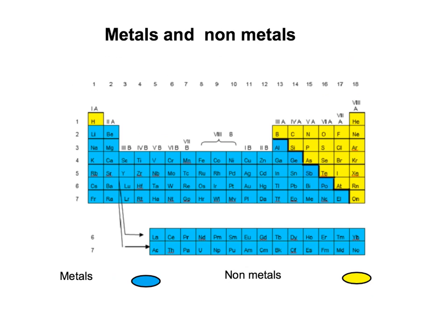This is an important division of all the elements in the periodic table. You may see a stair line here, which divides the periodic table into two. You will find metals in the left side of the periodic table, which are marked in blue here, and non-metals, which are marked with yellow.